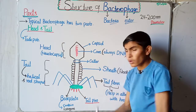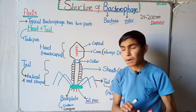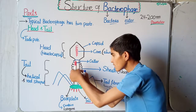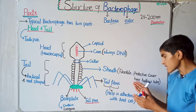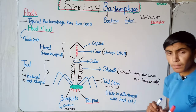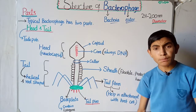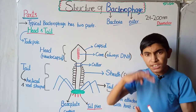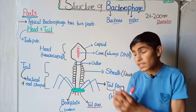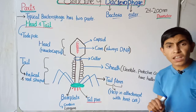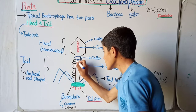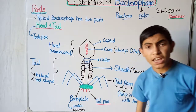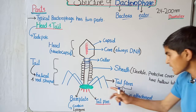The outer covering around the core is called the capsid. The next part is called the collar, whose function is to connect the head part with the tail part. The tail part consists of a sheath — a flexible protective cover surrounding a hollow tube. These sheaths are flexible, meaning they help the virus in contracting and relaxation, which is carried out during the life cycle of the bacteriophage, which we will discuss in the next lecture.